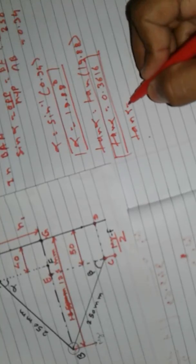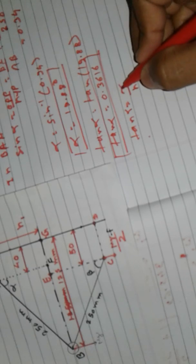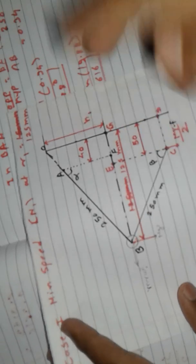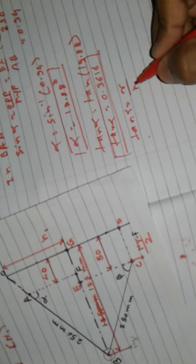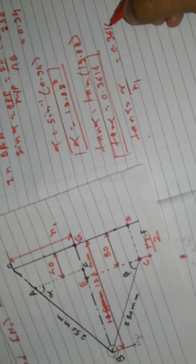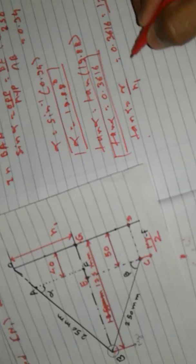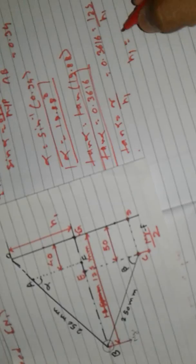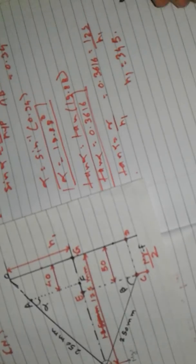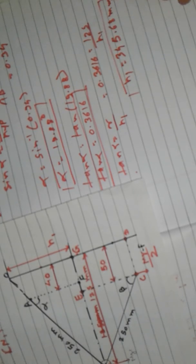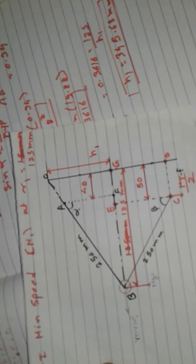Using tan alpha = R / h1, where R = 125 mm and tan alpha = 0.3616, we can find h1. So 0.3616 = 125 / h1, giving h1 = 345.68 mm. This is the first step — finding h1.